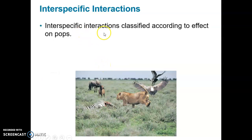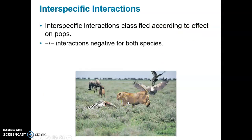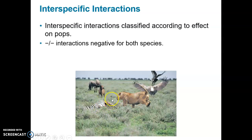Interspecific interactions are classified according to the overall effect on the different organisms involved. A negative-negative (minus-minus) interaction is negative to both species, and that's usually the result of direct competition. For example, if hyenas are coming in to compete with lions for a kill, they can interact in a negative-negative interaction — if they fight and hurt each other, there's a negative consequence on both species.